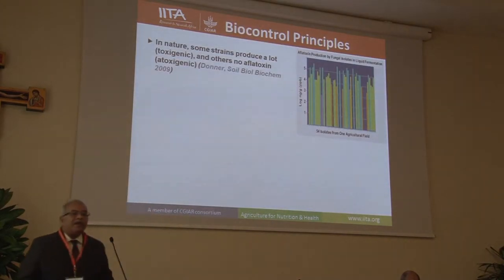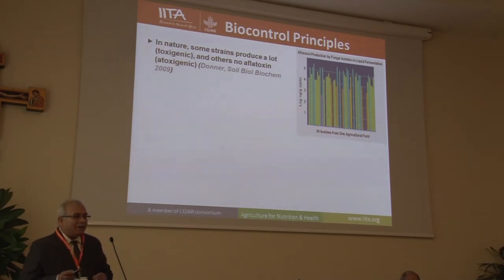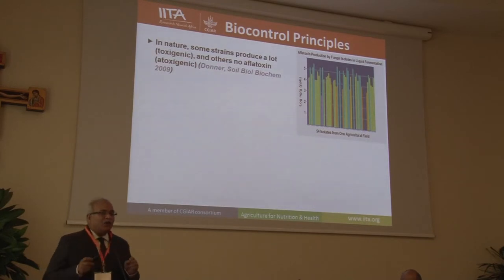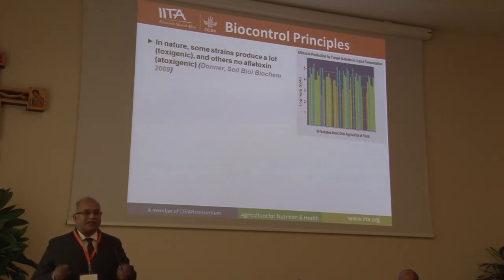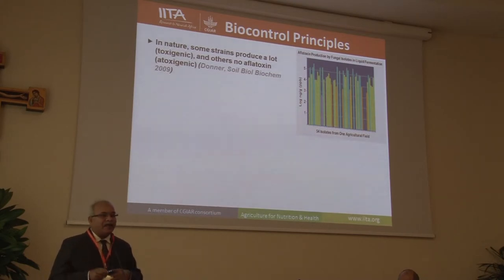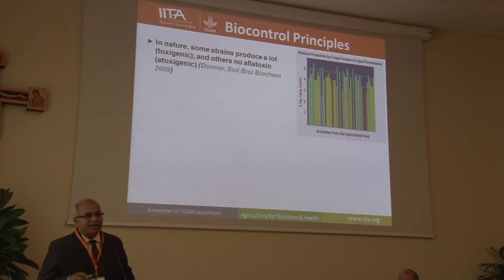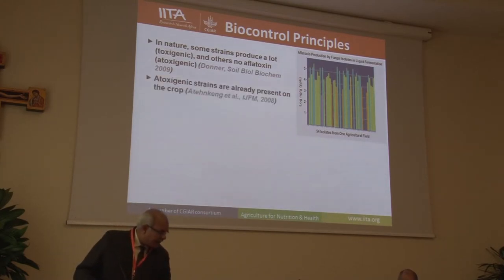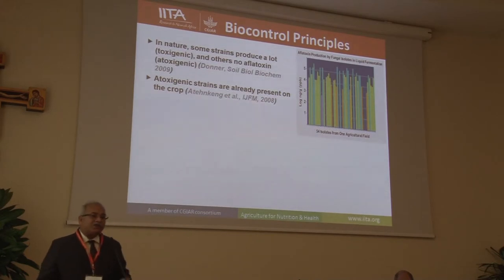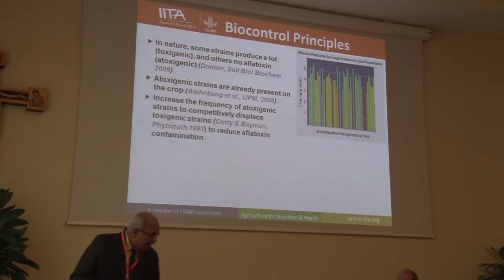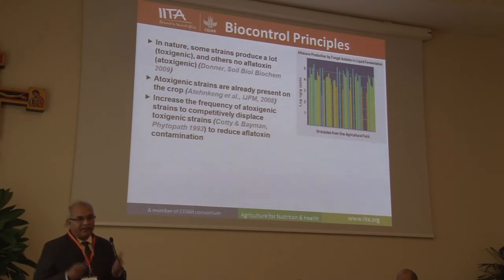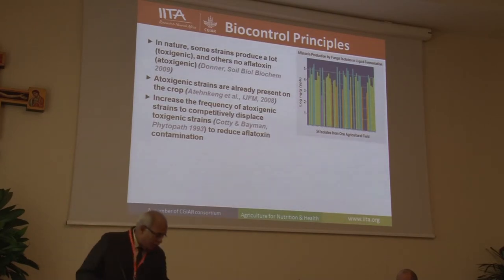In terms of what biocontrol is — within the fungus Aspergillus flavus, it's not actually the same. There is a large amount of variation: some strains produce a large amount of toxin, and other strains do not produce toxin at all. These non-toxin-producing strains are already present in the crop and in the environment. All we do is identify these strains and increase their frequency in the field and environment, such that the infection that occurs on the crop is by the non-toxin-producing strains.